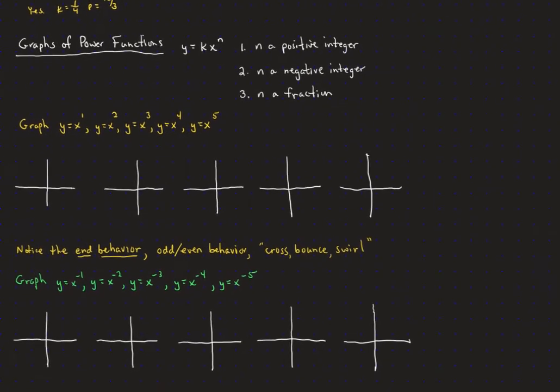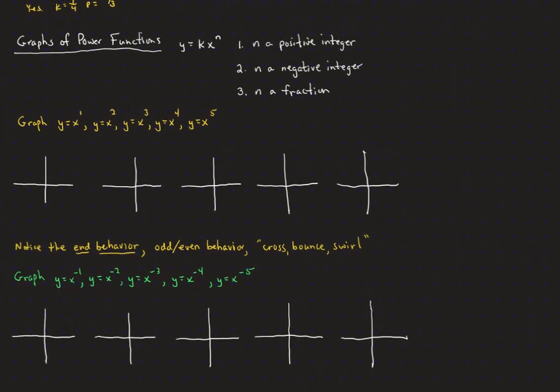Now we're going to explore this a little more. We'll look at y equals kx to the n. First, where n is just a positive integer — we'll look at y equals x, y equals x squared, y equals x cubed, and so on. Then we'll look at where n is a negative integer, looking at x to the negative 1, x to the negative 2, and so on. And we'll look at n as a fraction at a later date.